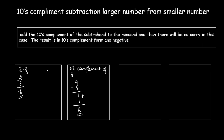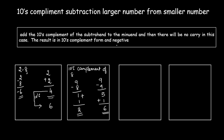Add the tens complement to the minuend: 2 plus 2 equals 4. There is no carry, so the answer 4 is in tens complement form. Find the tens complement of 4: nines complement is 9 minus 4 equals 5, add 1 gives 6. Since we negate this result, the final answer is minus 6, matching the regular subtraction.